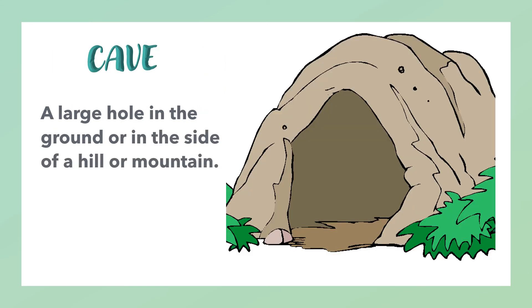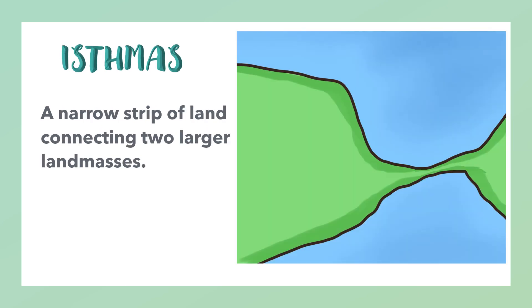Cave: a large hole in the ground or in the side of a hill or mountain. Isthmus: a narrow strip of land connecting two larger land masses.